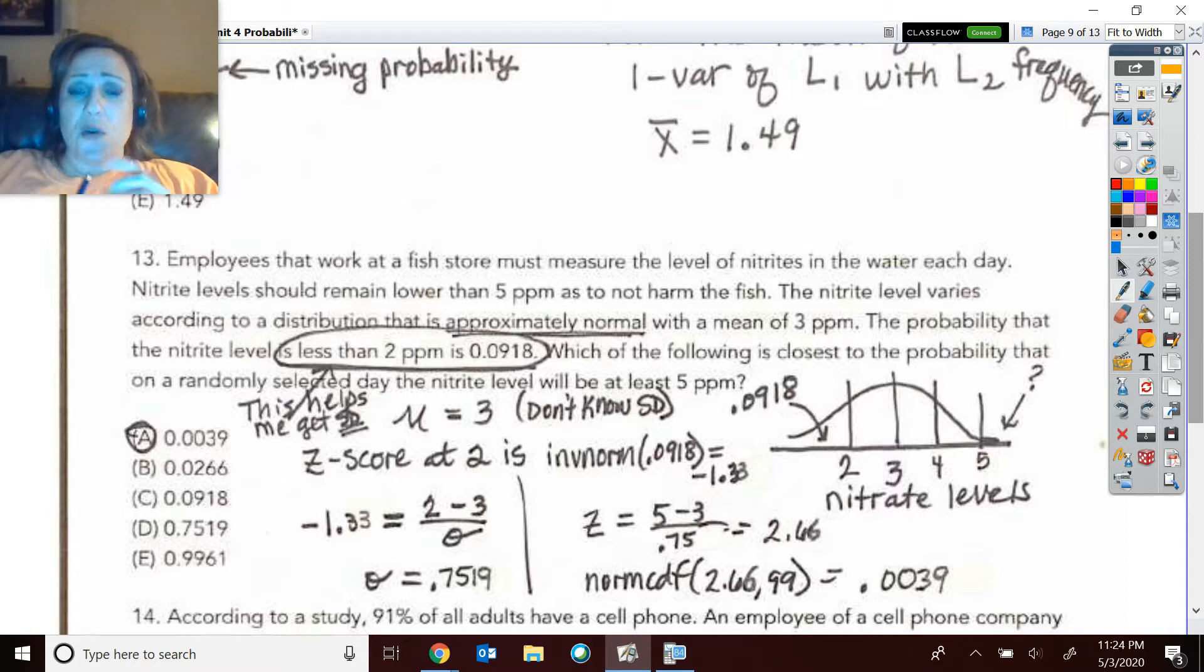So first of all, what happens is we know some facts. We know that to be acceptable, we need to have that nitrate level lower than five, so here we know that fact, as to not harm the fish.